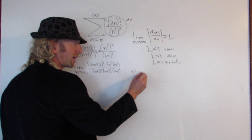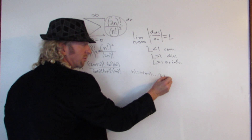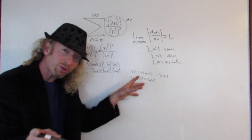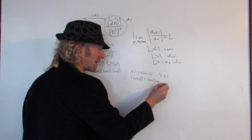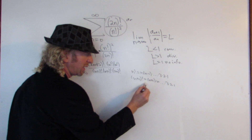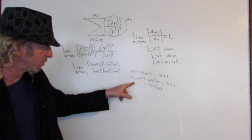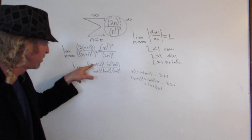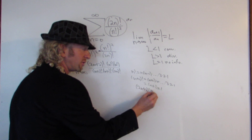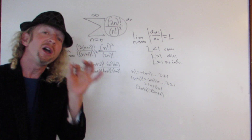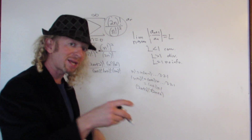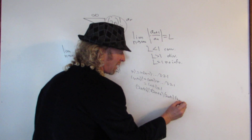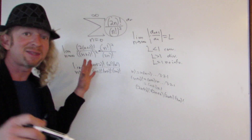Now, n! equals n·(n−1)·…·3·2·1. So (n+1)! is (n+1) times n! — that's how pros do it. And for (2n+2)!: (2n+2)! is simply (2n+2)·(2n+1) and then the rest is (2n)!, because the next term is 2n, then 2n−1, which is precisely (2n)!. So (2n+2)! = (2n+2)·(2n+1)·(2n)!.